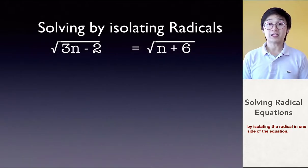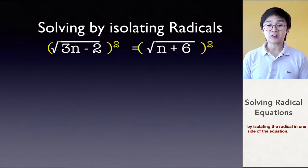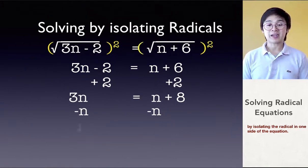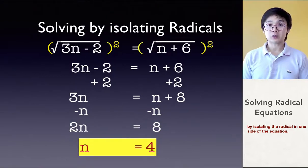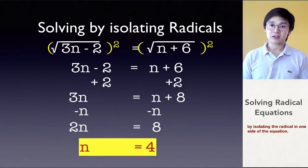And sometimes two radicals won't be as complicated, because sometimes you will have two radicals on both sides of the equation with no constant in any of the radical expressions. In that case, all we need to do is square both sides and get rid of the radical symbol, giving us 3n minus 2 is equal to n plus 6. By solving for n, we get 2n equal to 8, leaving us with n equal to 4. So this is how we solve radical equations using the algebraic steps presented in these examples.